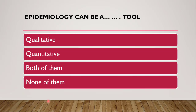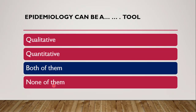The next question: Epidemiology can be which type of tool — only qualitative, quantitative, both, or none? The correct answer is both of them. Epidemiology quantifies through various rates and ratios when concerned with frequency, and determinants involves qualitative study of factors. So it includes both qualitative and quantitative studies.